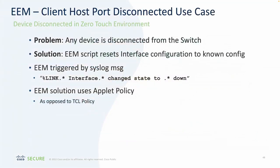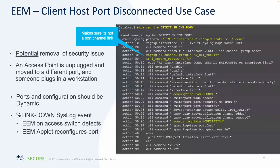In the event a host unplugs from an interface and the port goes down, we might want that port put back to a base configuration using an 802.1X closed mode configuration. Here's what happens: the interface goes down, it's not a port channel so we don't have to worry about overwriting port channels unnecessarily, and we take that port and put it back into closed mode. From then on, it will have a closed mode template assigned.